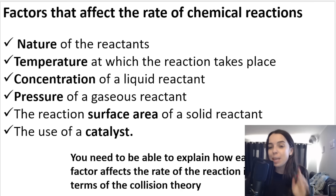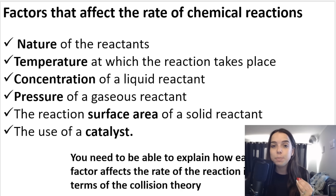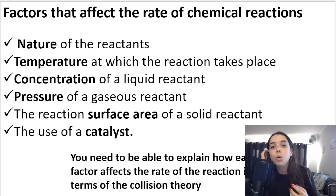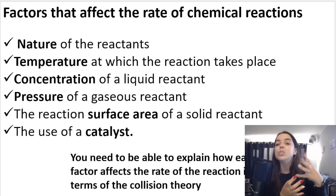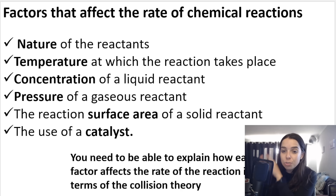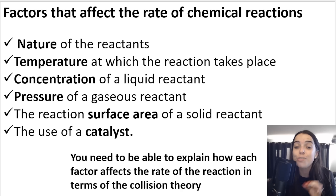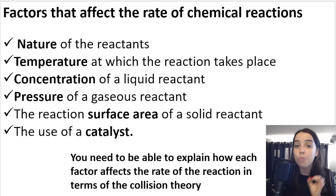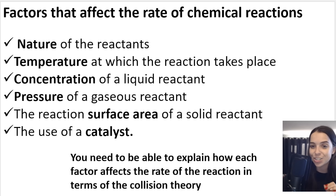Factors that affect the rate of chemical reactions. In the previous video in this playlist we spoke about the collision theory, which covers the criteria that need to be in place for an effective collision to take place, resulting in a reaction. These are the things that if we manipulate or change them, this will change the speed at which a reaction takes place.